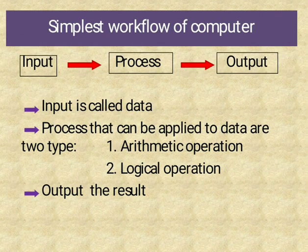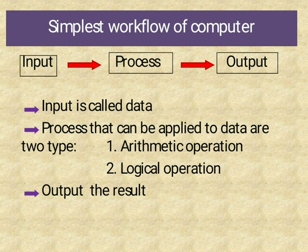Workflow of Computer: first Input, next Process, then Output. Input is called as data — any information first provided to the computer is called as input. The process can be applied to data in two types: Arithmetic Operation and Logical Operation. Arithmetic operations include addition, subtraction, multiplication, and division. Logical operations include values of True or False, NOT, and OR. The result obtained is called as Output.